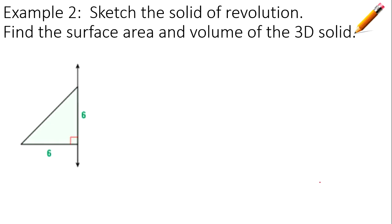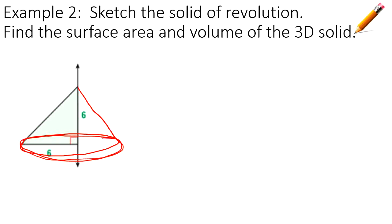Example two: sketch the solid of revolution and find the surface area and volume of the 3D solid. When we see this image revolving around the y-axis, a triangle is going to turn into a cone. The surface area of a cone is pi r squared plus pi times r times l, where l is the slant height. The volume is one-third times pi r squared times the height.